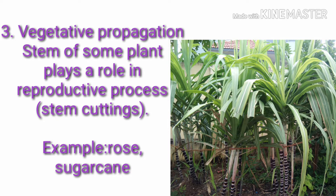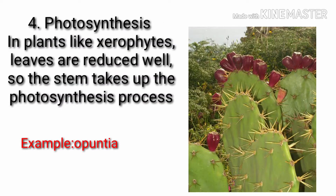Examples of vegetative propagation include rose and sugarcane, where we use stem cuttings to grow new plant seedlings. Next is photosynthesis in xerophytic plants — in xerophytes, the leaf is reduced, so the stem takes over the photosynthesis process. An example is Opuntia.